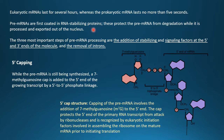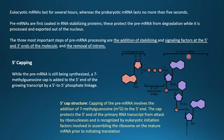RNA stabilizing proteins are very important as they protect the pre-mRNA from degradation while it is still being processed — that is the first important step. The second important step is the signaling factor at the 5' end: 5' capping. While the pre-mRNA is still being synthesized, a 7-methylguanosine cap — also known as m7G — is added to the 5' end of the growing transcript by a 5' to 5' phosphate linkage.